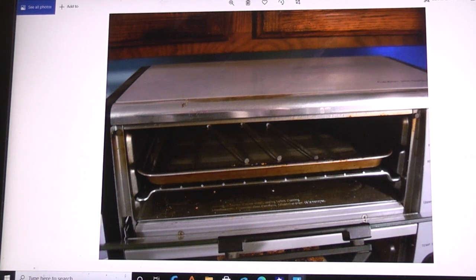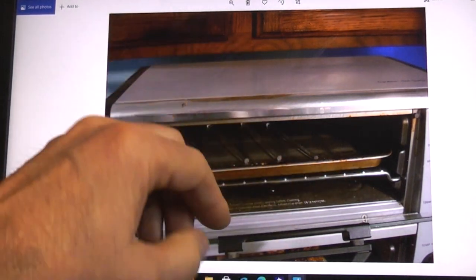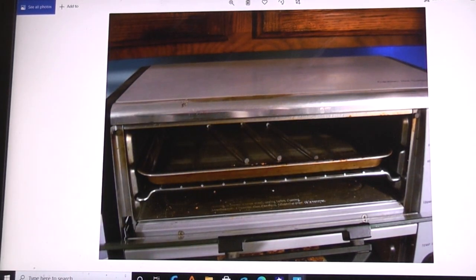In this case this toaster oven is a double decker toaster oven. I was using the top one because it was the smallest. Well the top one isn't actually temperature controlled, turn it on, it's on. So I kind of had to watch it. I had a couple of them that I let get too hot and they got all bubbly.